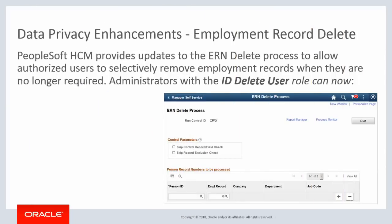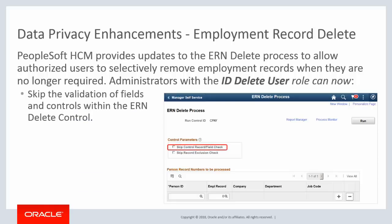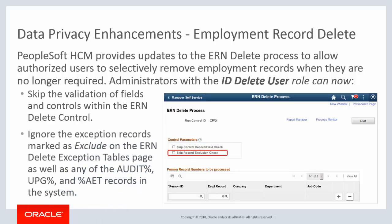In Image 27, PeopleSoft HCM provides updates to the ERN delete process. With these changes, authorized users can now selectively remove historical employment records from the application when they are no longer required to be retained. Administrators with the ID delete user role can now skip the validation of fields and controls within the ERN delete control and ignore specific exception records marked as exclude on the ERN delete exception tables page, as well as any records in the system that begin with audit and UPG and that end in AET, noting that the percent symbol acts as a wildcard. This completes our discussion of the Data Privacy Enhancements Employment Record Delete feature.